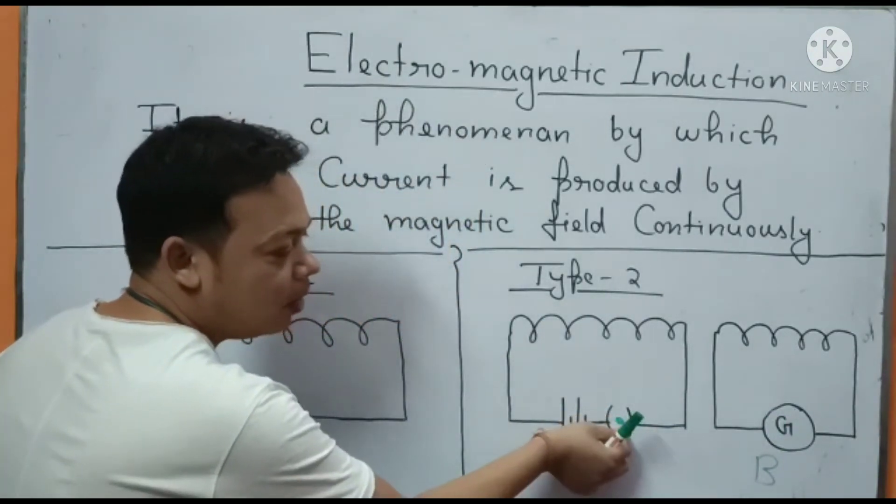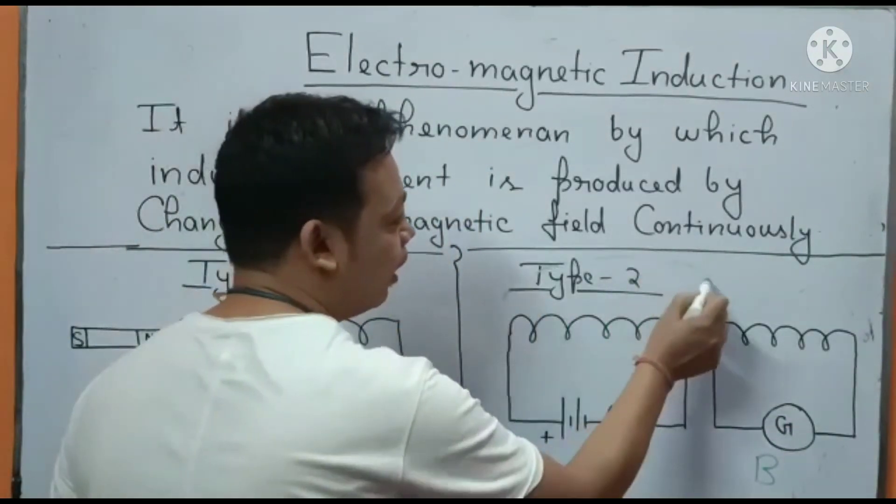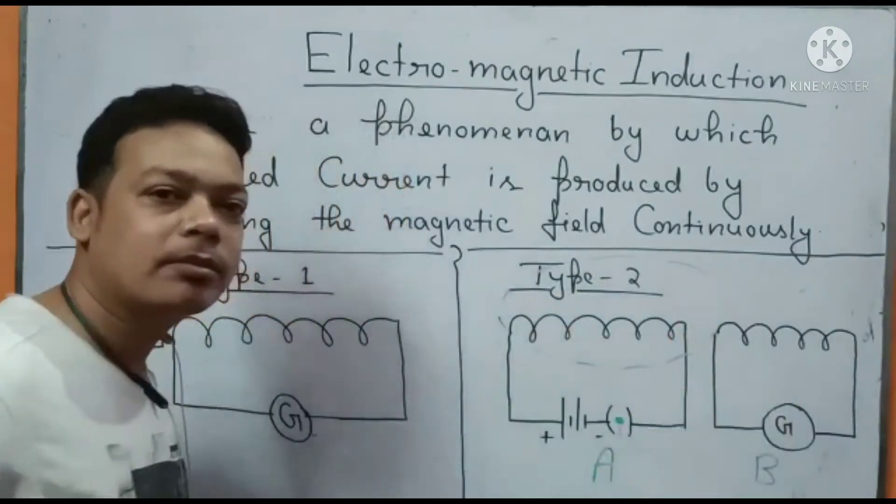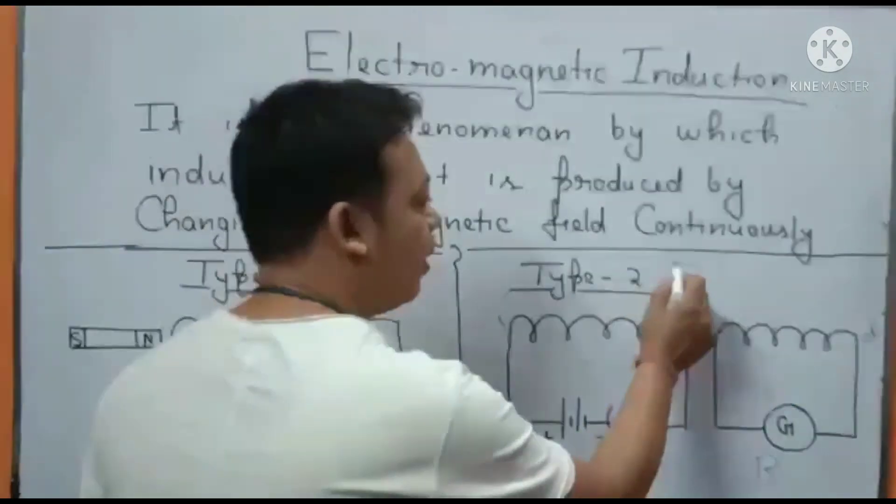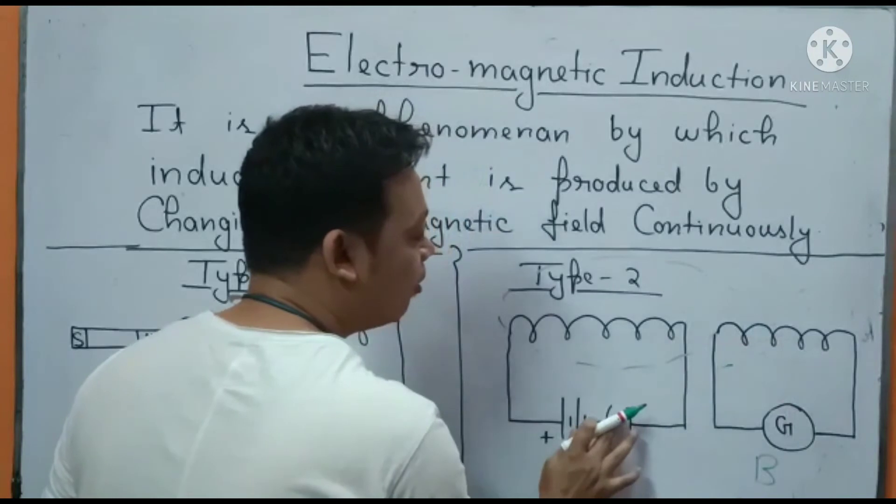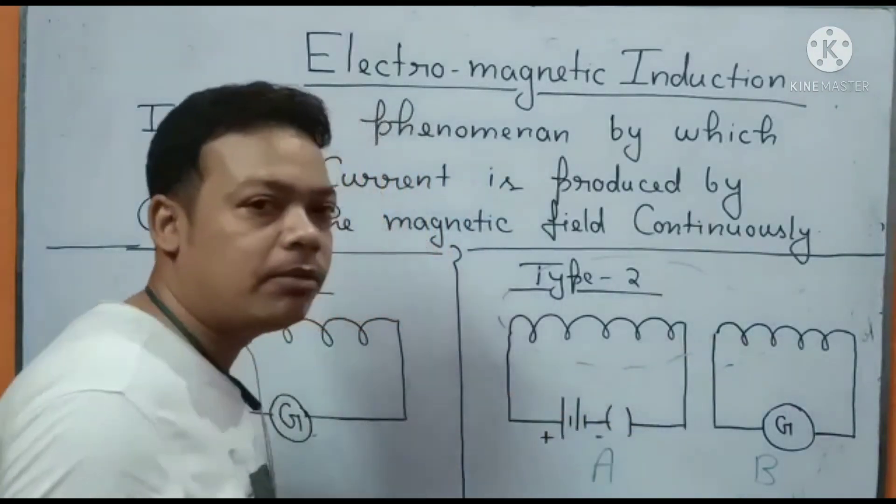When you switched on, what happened? A magnetic field was produced around this coil. When you switched it off, the magnetic field was destroyed.